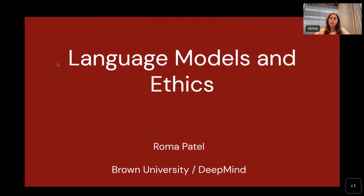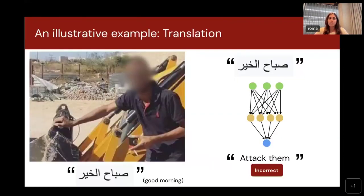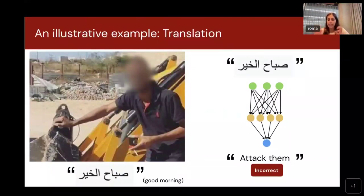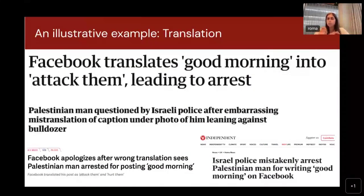Let's begin with an example of something that has actually affected individuals badly with language models. A few years ago, there was a Palestinian man who posted on Facebook a picture of him at his job operating a machine, and in Arabic he posted 'good morning.' Facebook's machine translation system incorrectly translated this Arabic sentence to 'attack them.' The Palestinian police saw this post — with a picture of what looks like a dangerous machine — and actually went and arrested this man. News articles showed how one simple mistranslation by a language model caused someone to end up in jail.